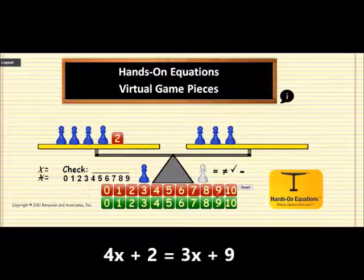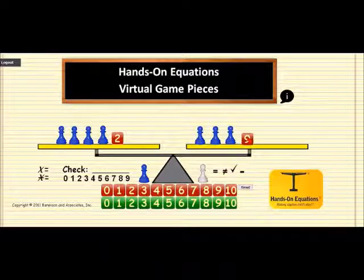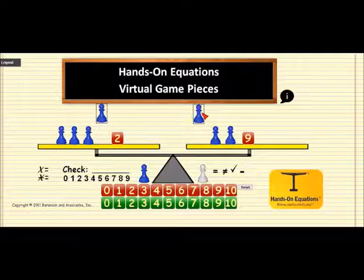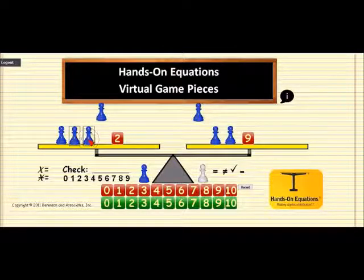Once the pieces are placed on the scale, they can use legal moves. They can remove pieces simultaneously from each side of the scale. That's a legal move. We can do another legal move. This time, let's remove two blue pawns from each side.